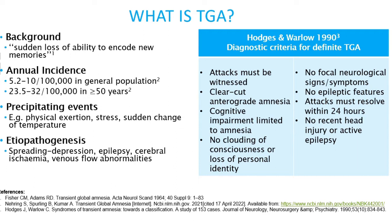The exact mechanism underlying transient global amnesia is poorly understood, but various factors have been discussed as potential causes. These include spreading depression, epilepsy, cerebral ischemia, and abnormalities of venous flow.